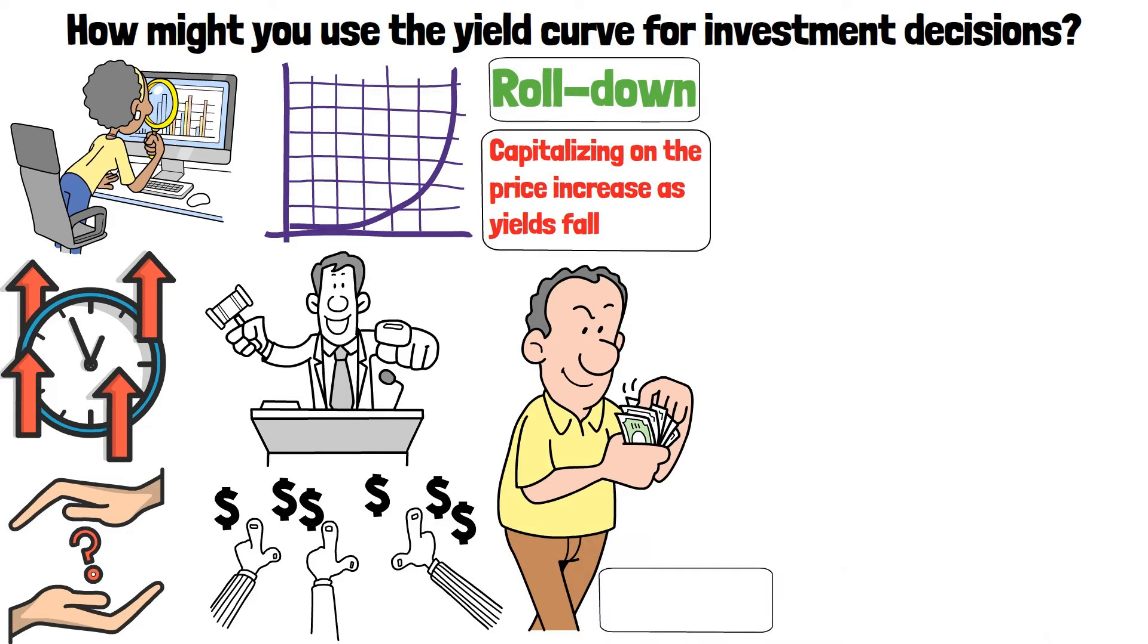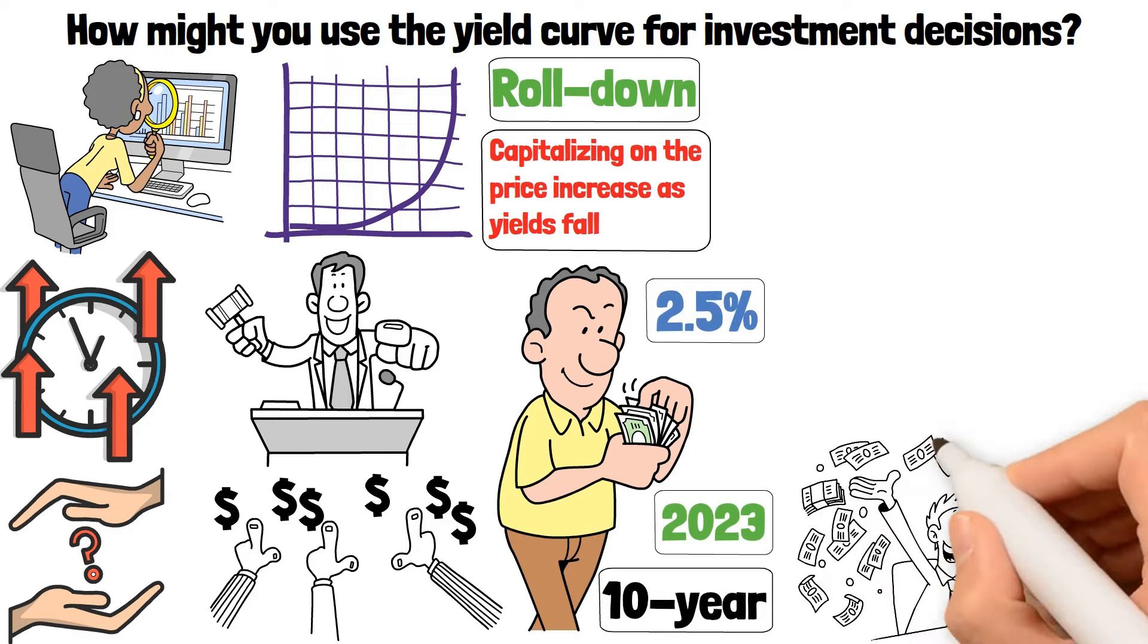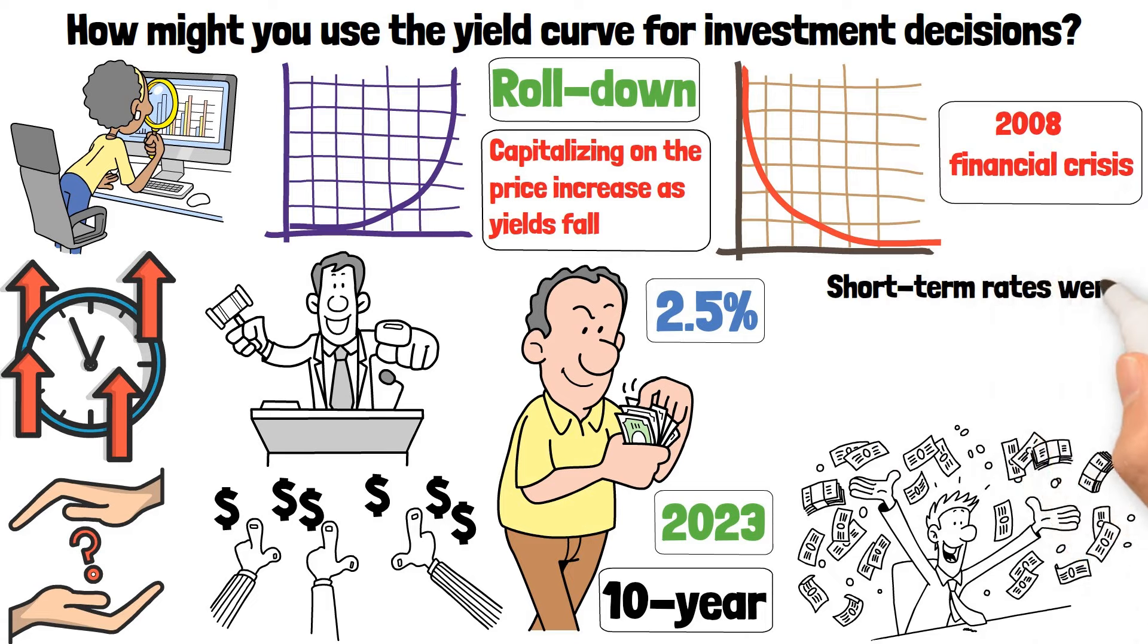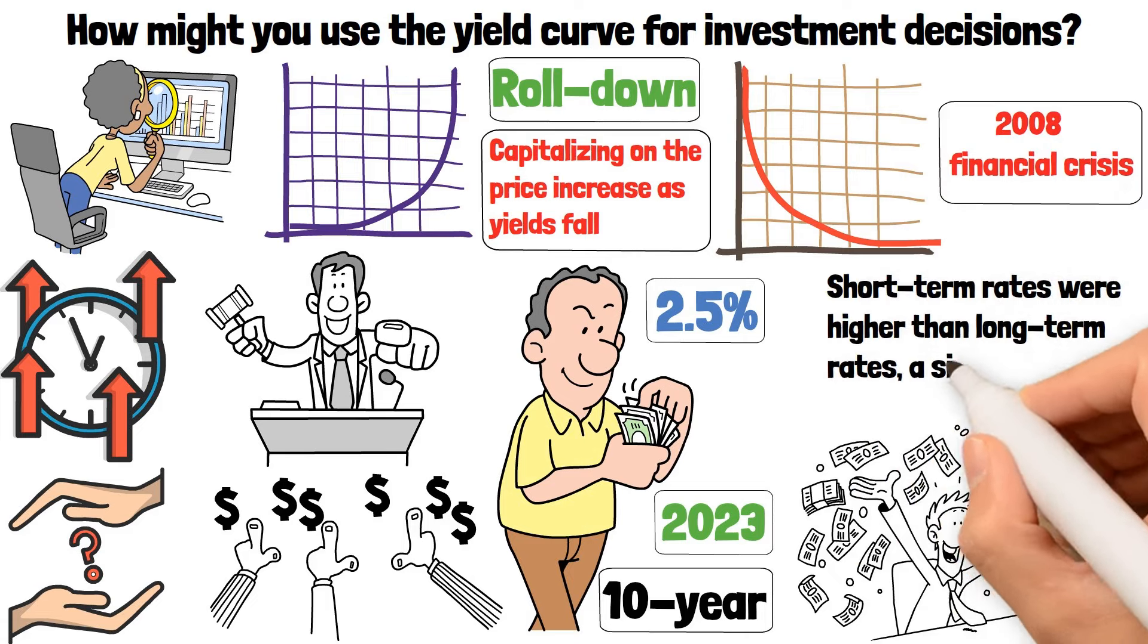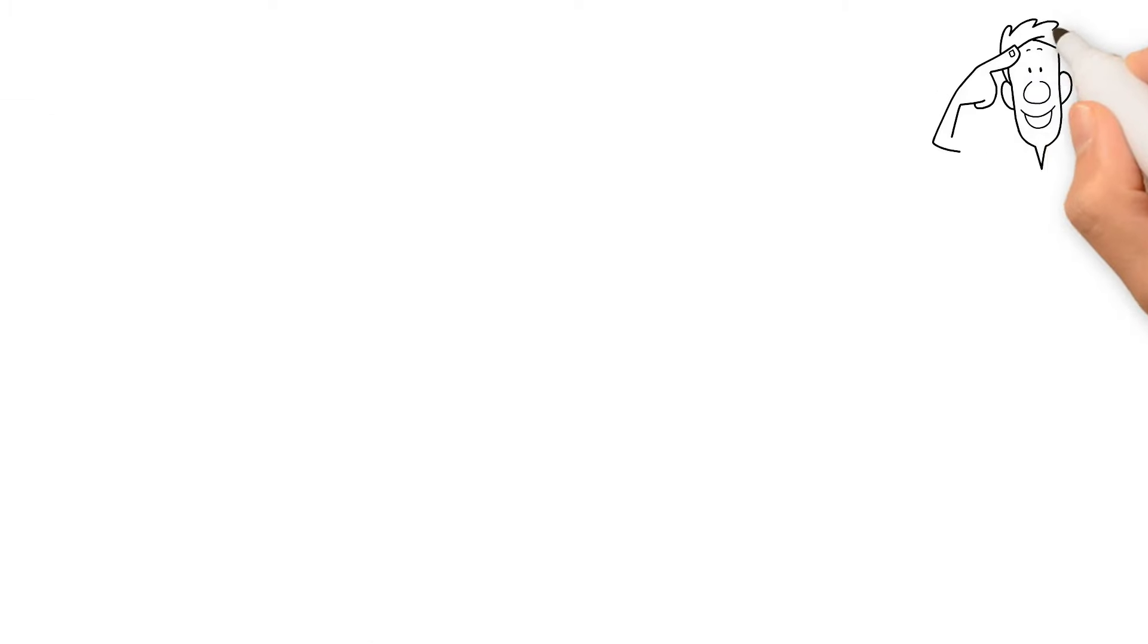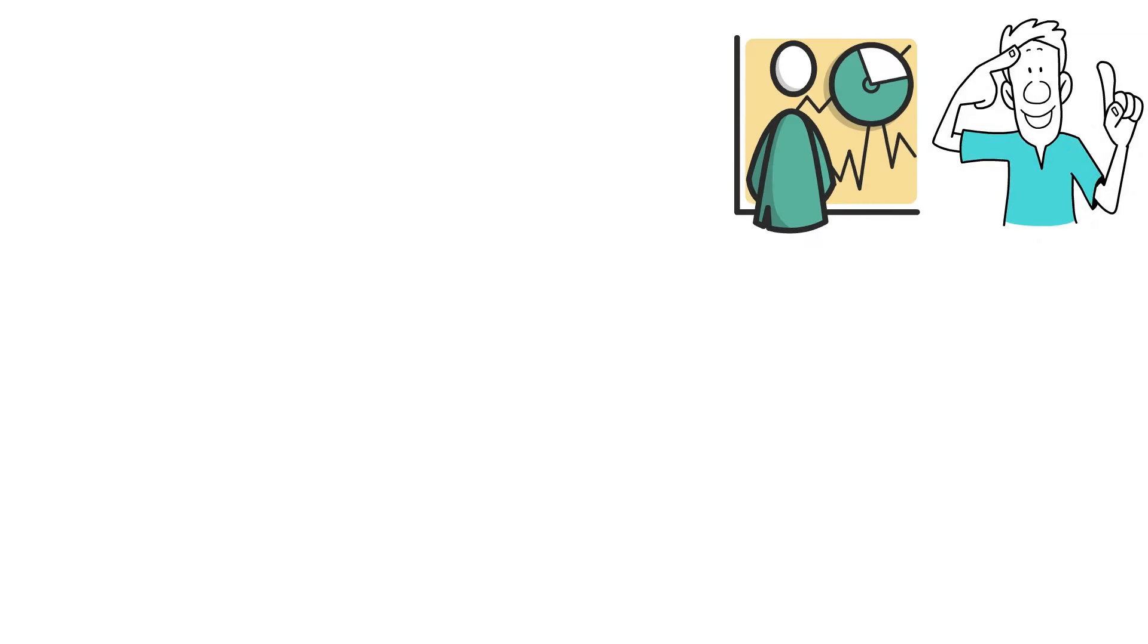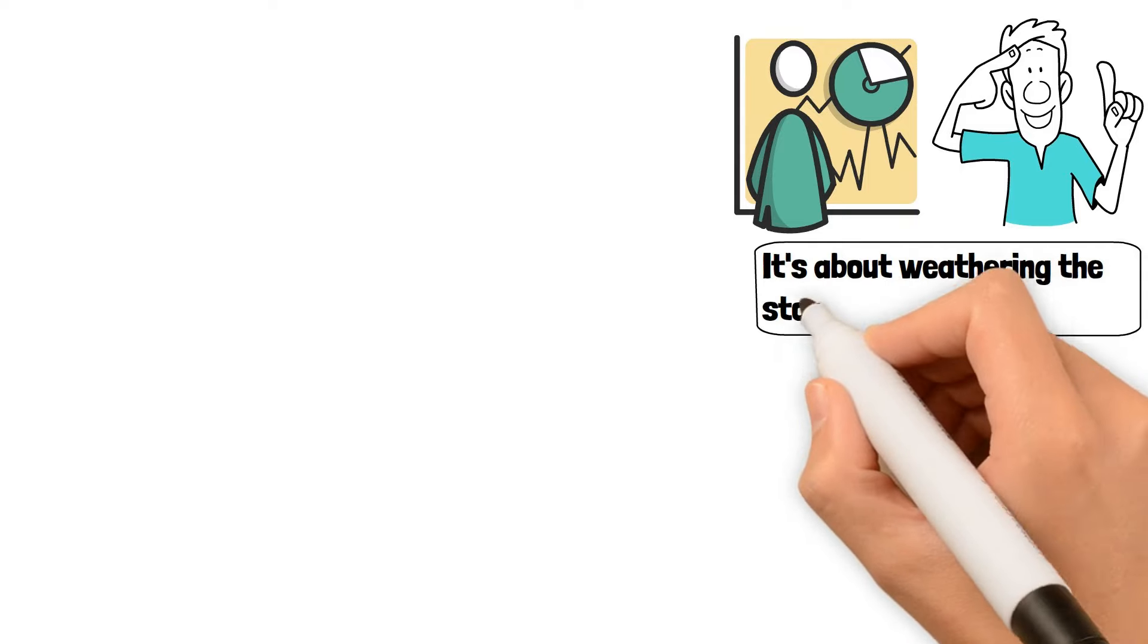This strategy can be profitable in a stable rate environment. For example, if you had bought a 10-year Treasury bond in 2023 with a yield of 2.5% and sold it 5 years later, you might have enjoyed both the interest payments and a capital gain. But what about when the curve inverts, like it did before the 2008 financial crisis, signaling economic distress? Short-term rates were higher than long-term rates, a sign to tread carefully. In such times, you might shift towards short-term bonds or defensive assets that are traditionally more resilient during downturns. It's about weathering the storm with minimal damage.